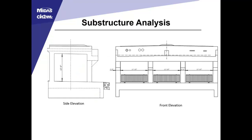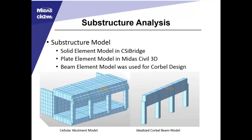A side elevation and a front elevation of the structure showing the four columns. The side elevation shows the back wall on the left, the columns on the right, and in the transverse direction that eccentricity. For the model, it was originally modeled for primary design in CSI Bridge using solid elements, which allows for stress interaction between elements in multiple directions. With plates we're a little more limited, and with beam elements even more so.